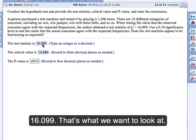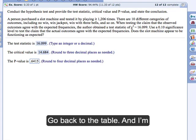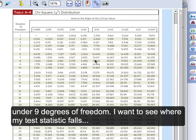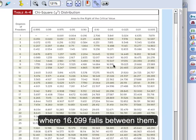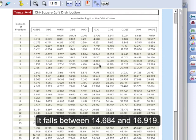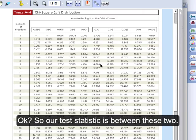Keeping in mind that our test statistic is 16.099. That's what we want to look at. So go back to the table. And I'm under nine degrees of freedom. So I want to see where my test statistic falls, 16.099. If I just look through this row, you find the numbers where 16.099 falls between them. So it falls between 14.684 and 16.919. Okay, so our test statistic is between these two.